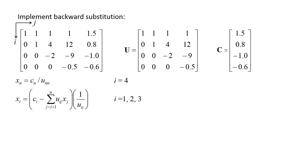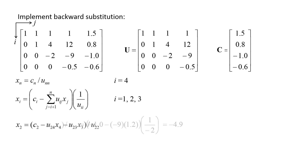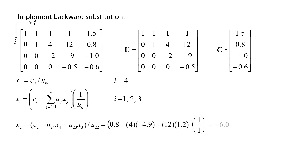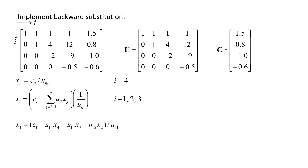For x1, x2, and x3, we use the equation: xi equals the quantity ci minus the summation of uij times xj, where j varies from i plus 1 to 4, divided by uii. We apply this in reverse order, starting with x3. x3 equals the quantity c3 minus u34 times x4, divided by u33, which gives negative 4.9. Next, x2 equals the quantity c2 minus u24x4 minus u23x3, divided by u22, giving negative 6. Finally, x1 equals the quantity c1 minus u14x4 minus u13x3 minus u12x2, divided by u11, giving negative 0.8.